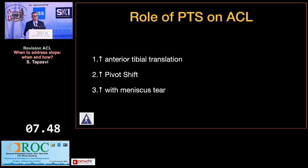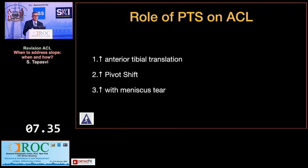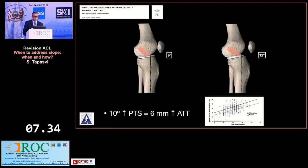The high posterior tibial slope has three effects on ACL biomechanics. First, it is going to increase the anterior tibial translation. Second, it's going to increase the amount of pivot shift that you have. And third, if you have a meniscus tear, the whole effect becomes catastrophic.